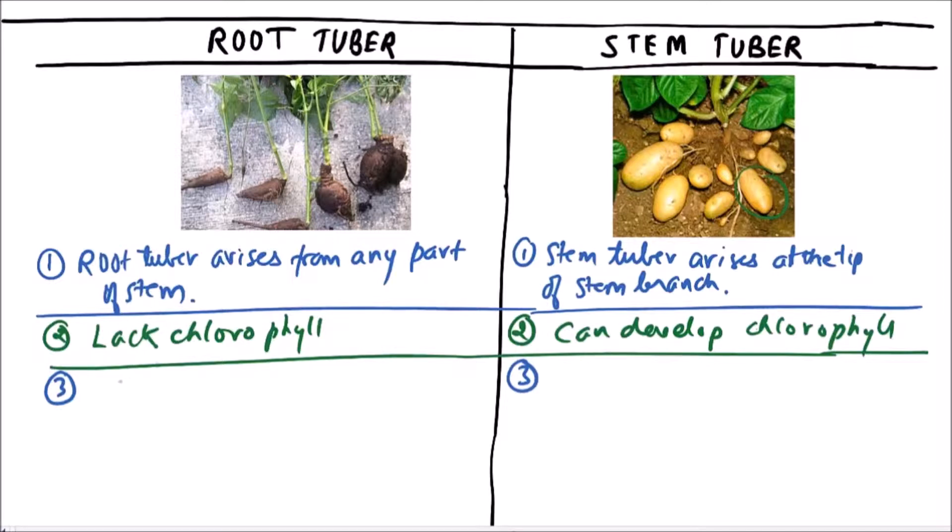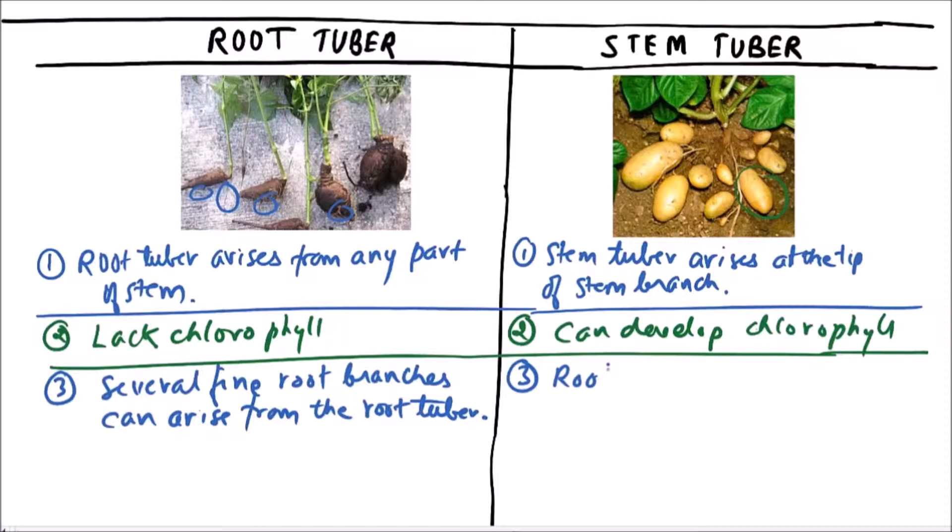Several fine root branches can arise from the root tuber. We can observe these roots arising from the root tuber. But in the case of stem tuber, roots are absent.